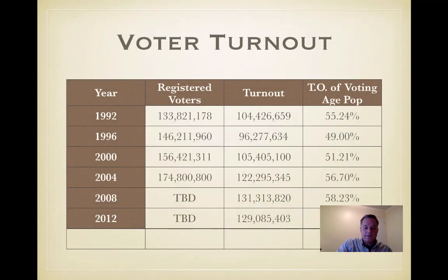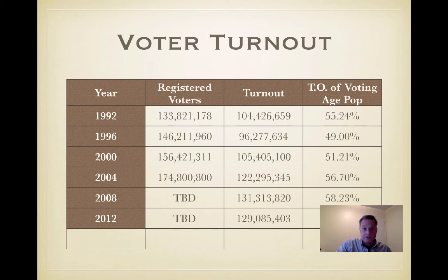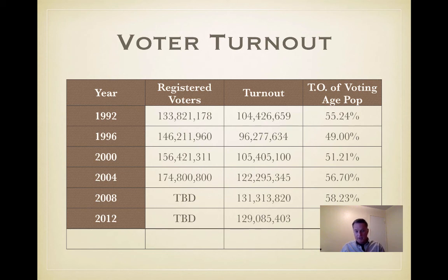That leaves us with four historical qualifications for suffrage. One is citizenship, which is stated in the Constitution. One is residency — you have to be a resident of the state you vote in. The third is age, which is now 18. And the fourth is registration, which is required in all states with the exception of North Dakota, and a couple of states now offer same-day registration.